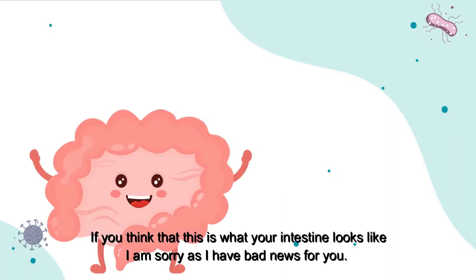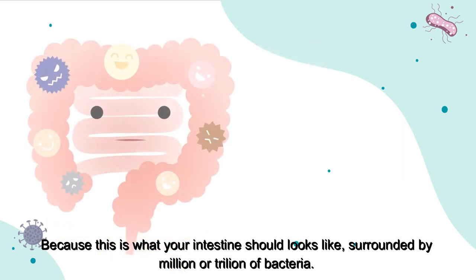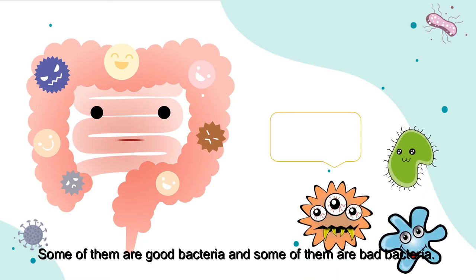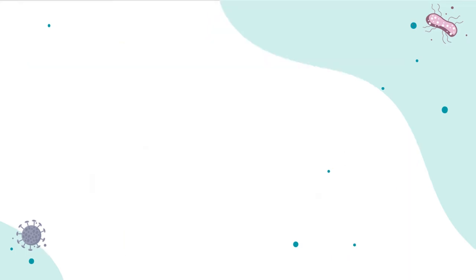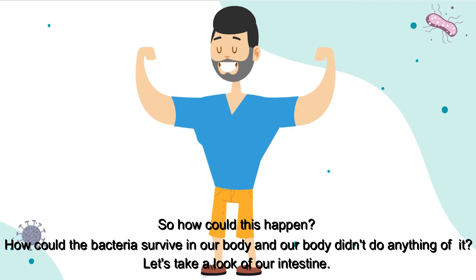If you think that this is what your intestine looks like, I'm sorry as I have bad news for you, because this is what your intestine should look like — surrounded by millions or trillions of bacteria. Some of them are good bacteria and some of them are bad bacteria. So how could this happen? How could the bacteria survive in our body and our body didn't do anything about it?